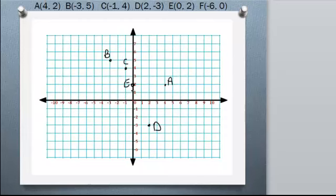And then F, we have (-6, 0). So you go 6 in the negative direction on x but you go 0 up or down. So this would be point F.